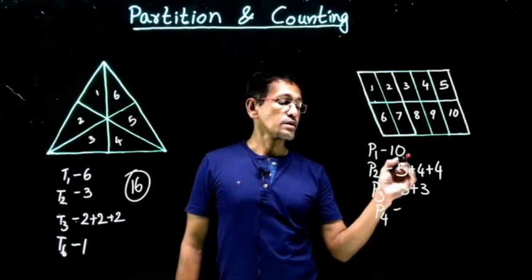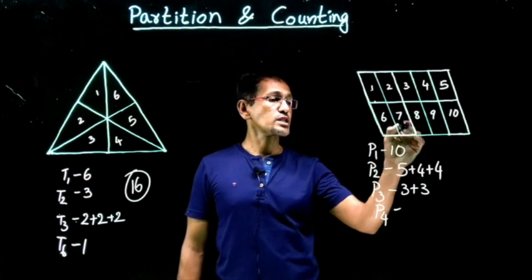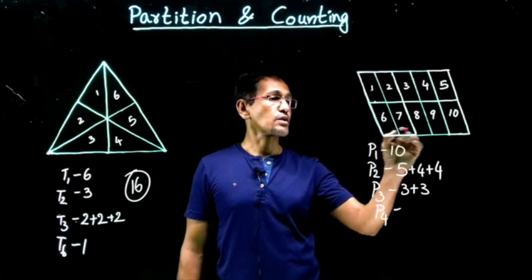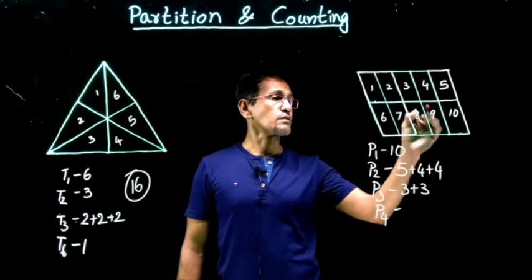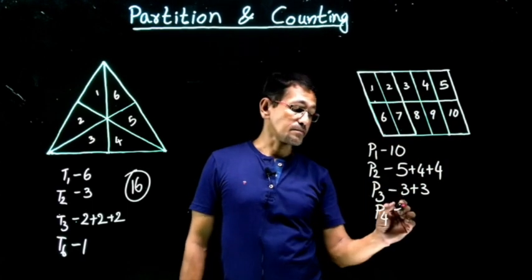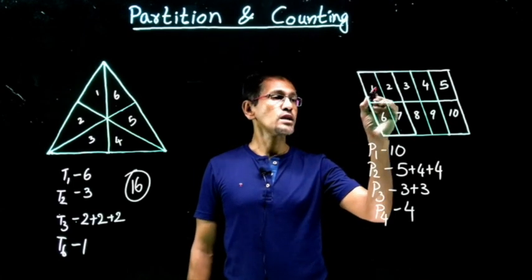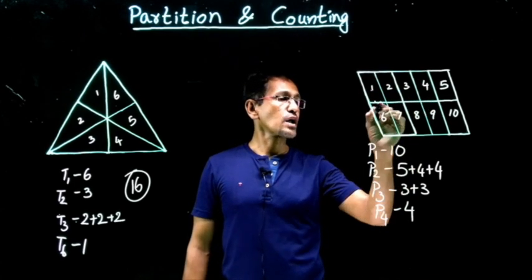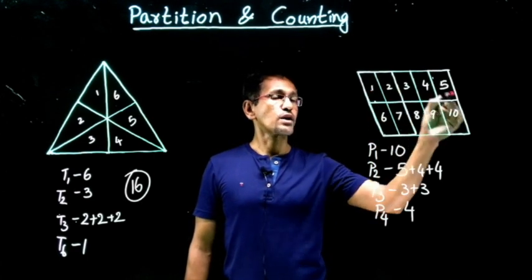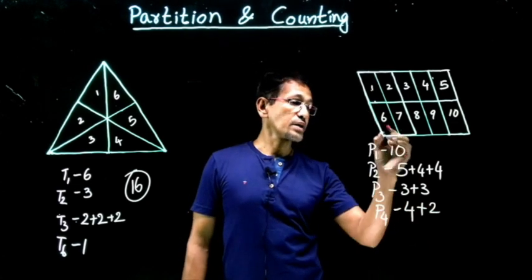Four pieces together: one, two, six, seven is a parallelogram; two, three, seven, eight is another; three, four, eight, nine is another; four, five, nine, ten is another — so four parallelograms. Any other possibility? One, two, three, four is a parallelogram; two, three, four, five is another — that's two more, and another two on the bottom row. So P4 total: four plus two plus two equals eight.